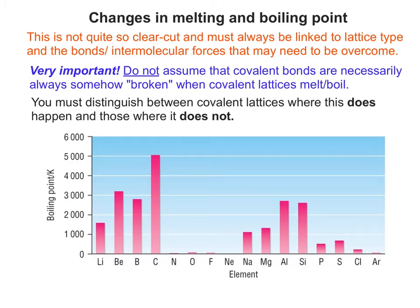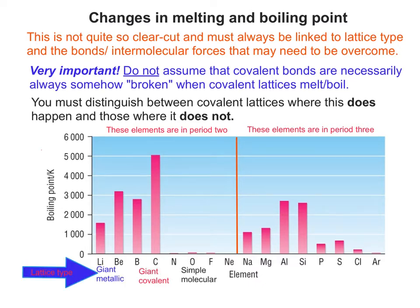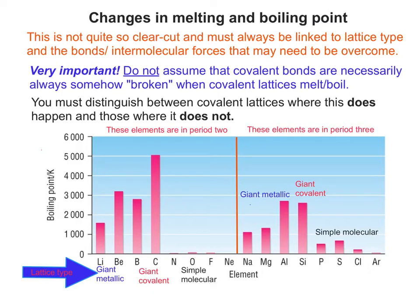The graph here represents two periods in the periodic table — period 2 and period 3, split down the middle. Looking at period 2 first, we start off with giant metallic lattices, moving over to giant covalent lattices, and then finally simple molecular lattices. A similar kind of trend exists in period 3. If you compare the fourth element along — the giant covalent — and compare carbon and silicon, you have a larger atomic radius in silicon, so therefore a weaker nuclear attraction for the outer shell electrons, meaning the giant covalent structure is not as strong and silicon has a lower boiling point.